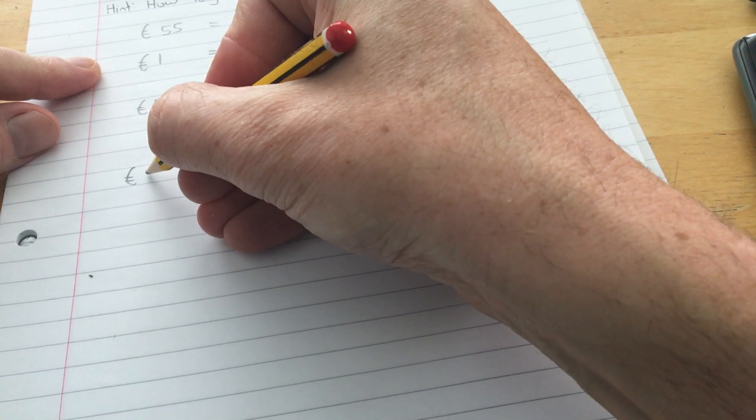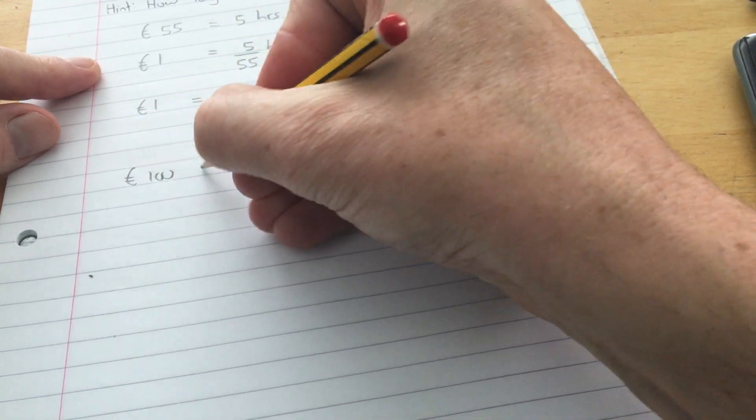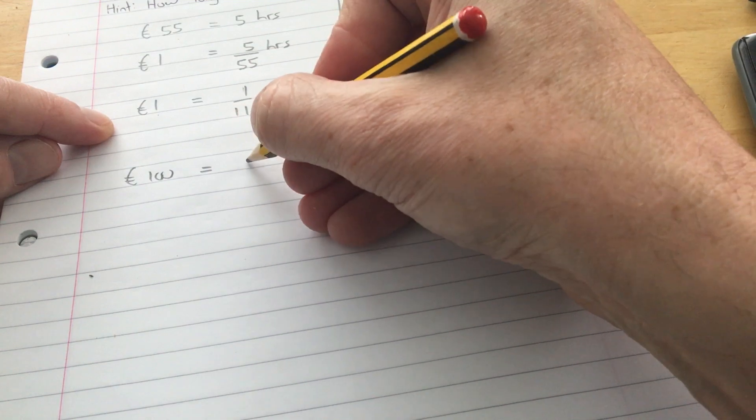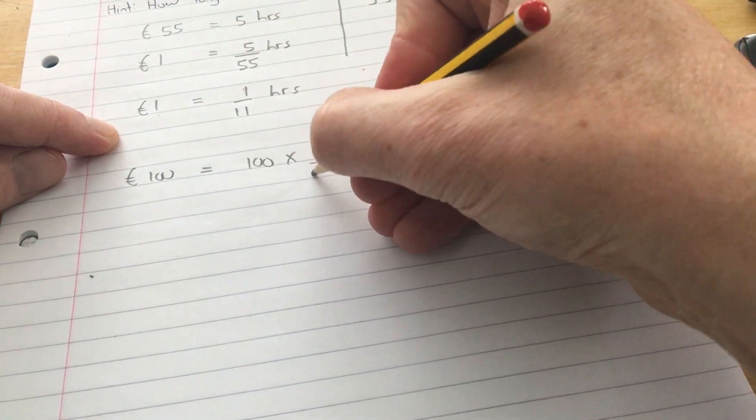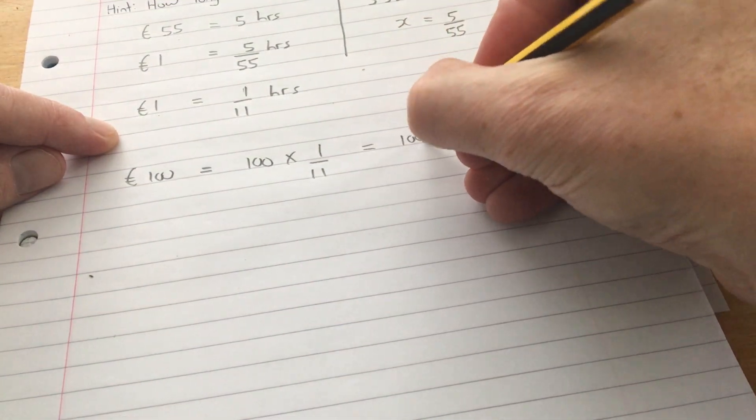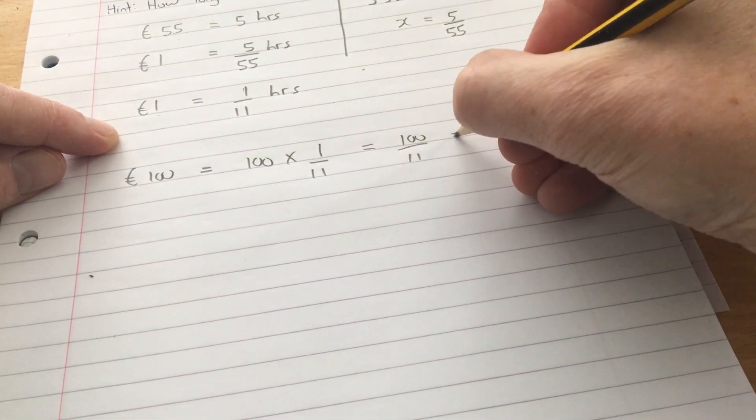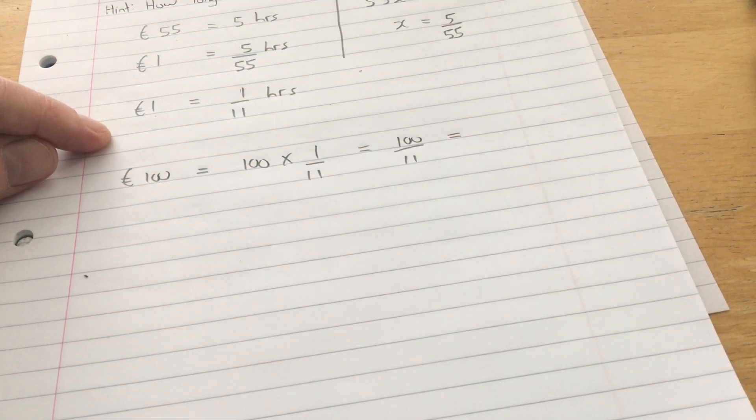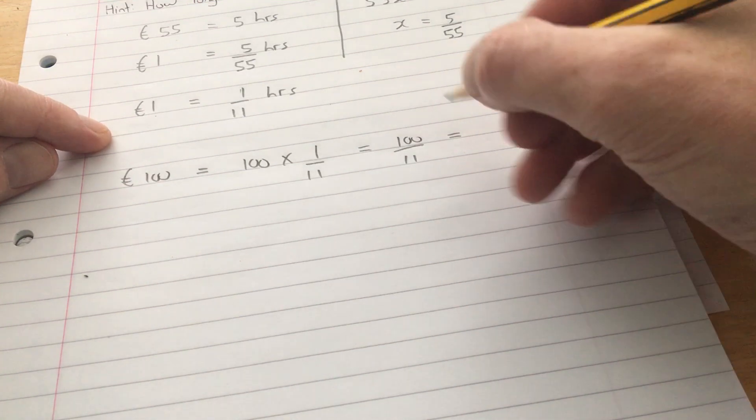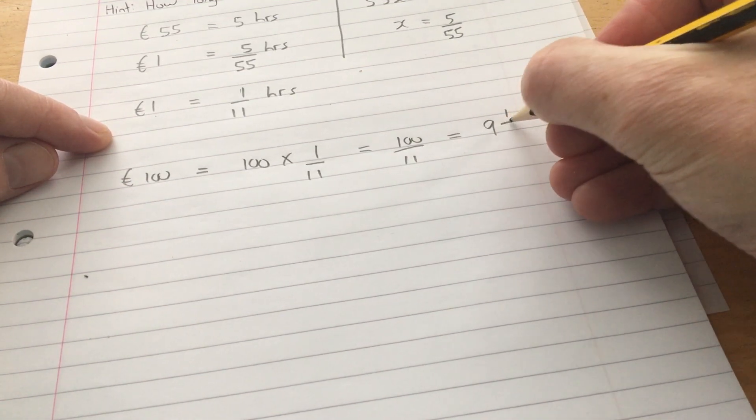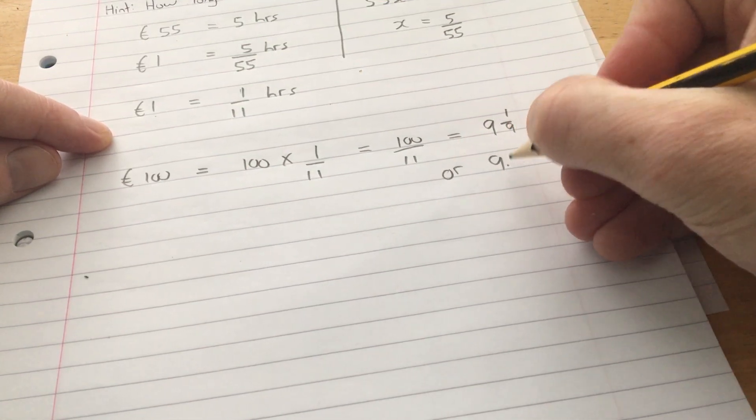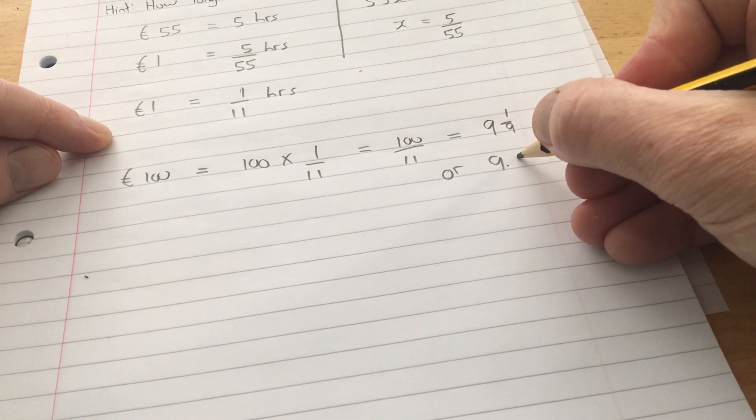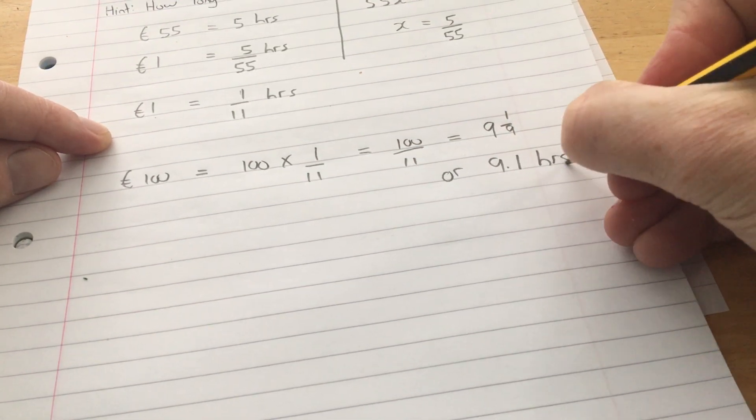Therefore, if he wants to earn 100 euro, 100 euro will be that time multiplied by 100, which is 100 over 11, which is 9 hours and 1 eleventh of an hour, or 9.1 hours rounded to 1 decimal place.